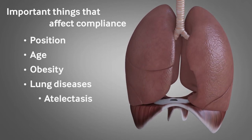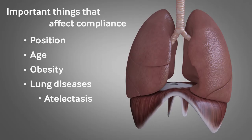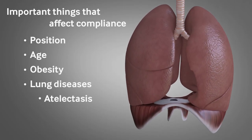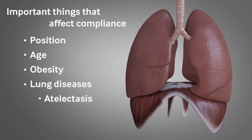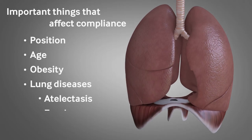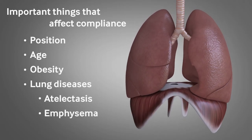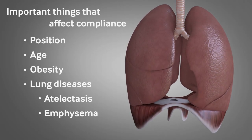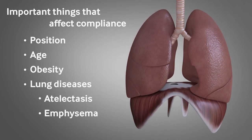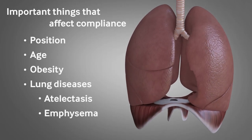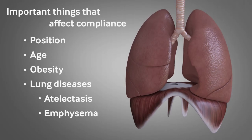Atelectasis, where the small airways and bronchioles get blocked and patches of the lungs can collapse, decreases lung compliance because it's harder for air to get in. Whereas in diseases such as emphysema, where the alveoli are dilated and baggy, compliance is increased. However, this is at the expense of elasticity, because the alveoli become floppy and lose their elastic recoil.